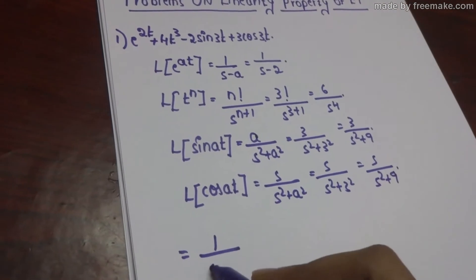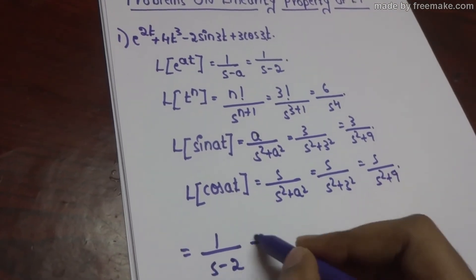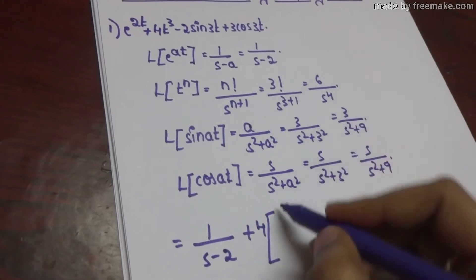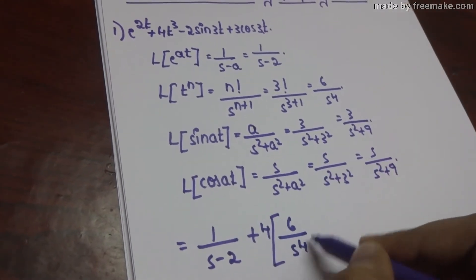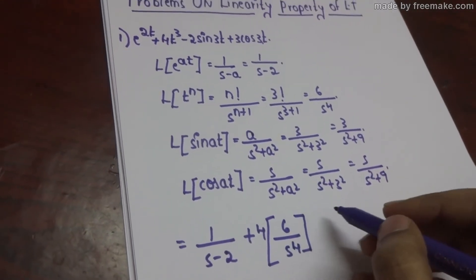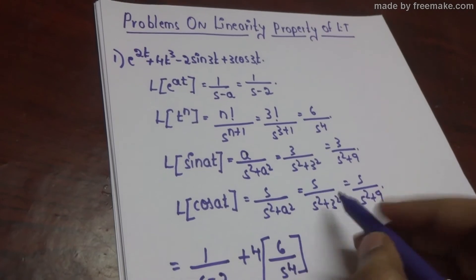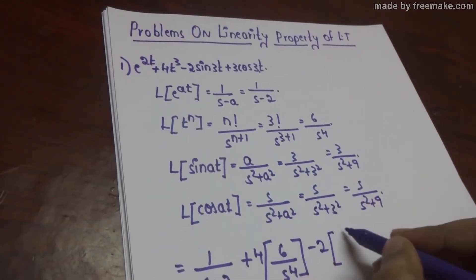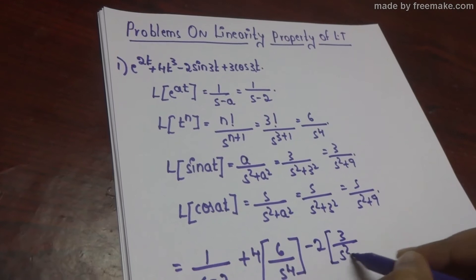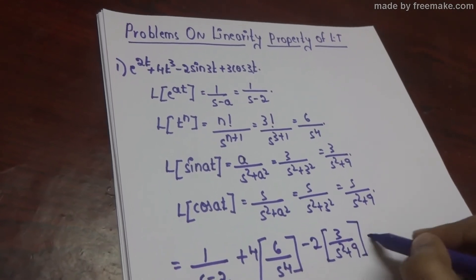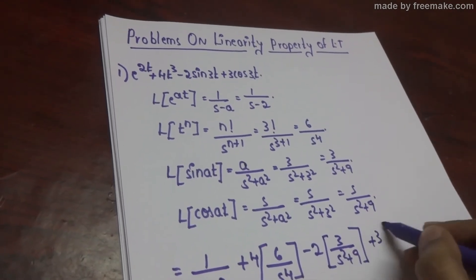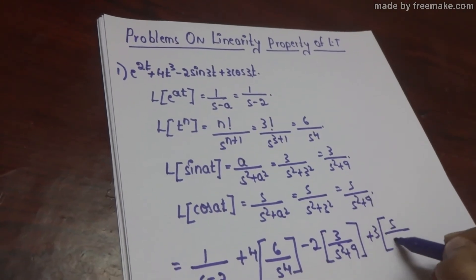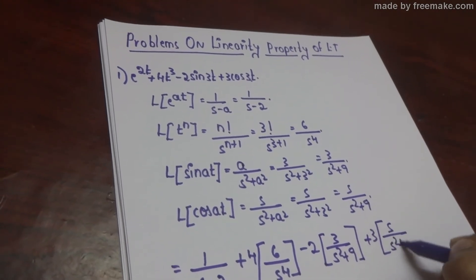Substituting these values, the answer for e power 2t is 1 by s minus 2, plus 4 into t cube gives 4 times 6 by s power 4, minus 2 into sine 3t gives 2 times 3 by s square plus 9, plus 3 into cos 3t gives 3 times s by s square plus 9.